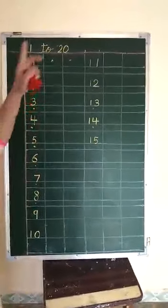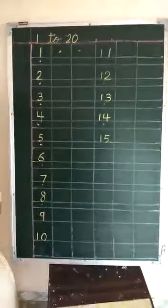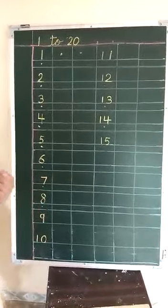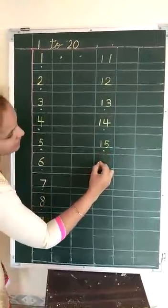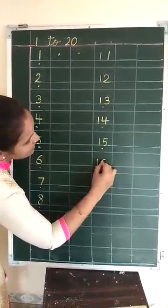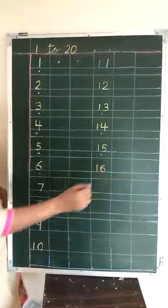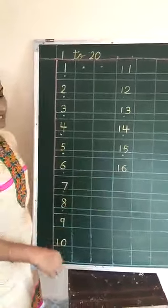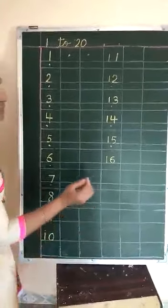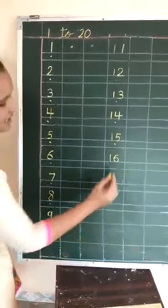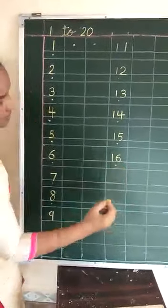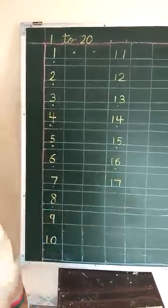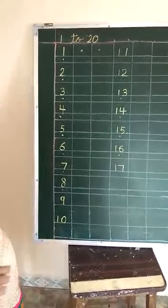Tell me — after 15, which number comes? 16. Put 1 dot. Write down 16. After 16, which number comes? 17. Put 1 dot. Write down 17.